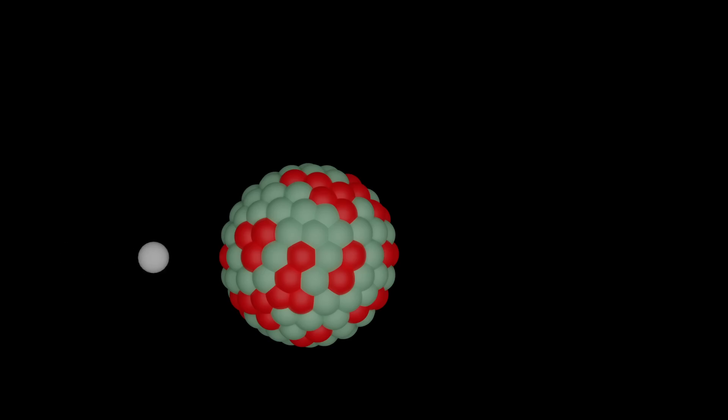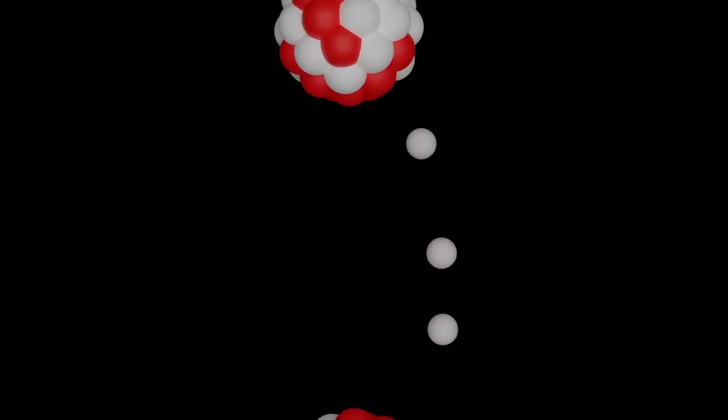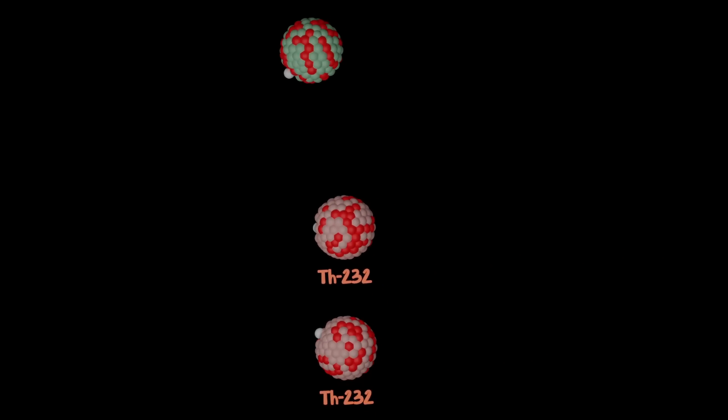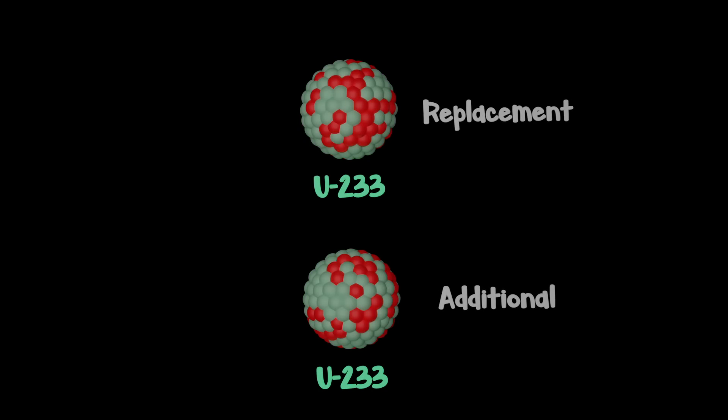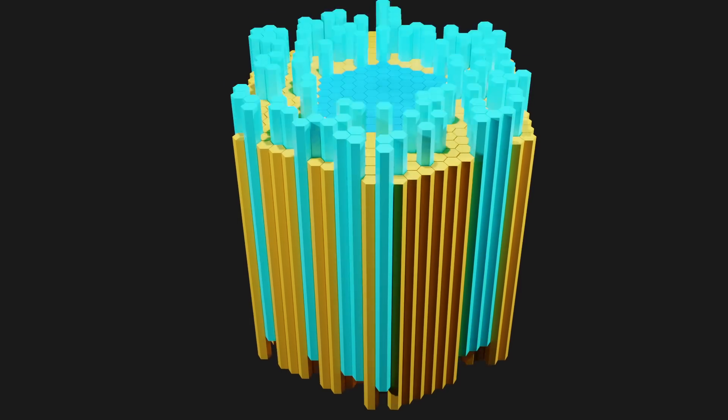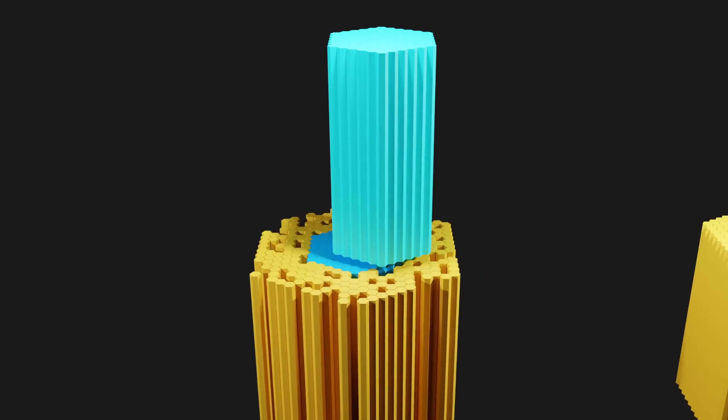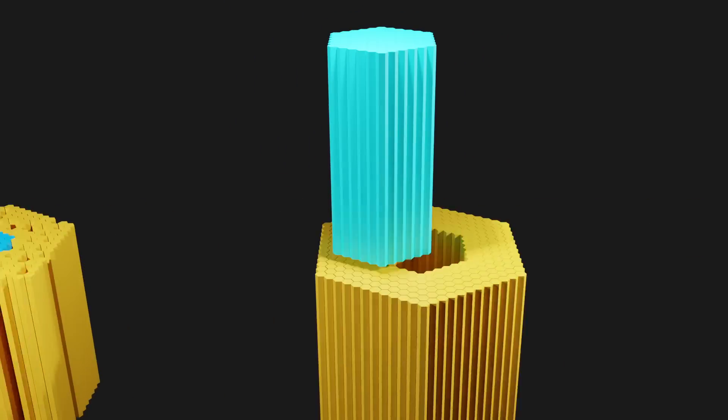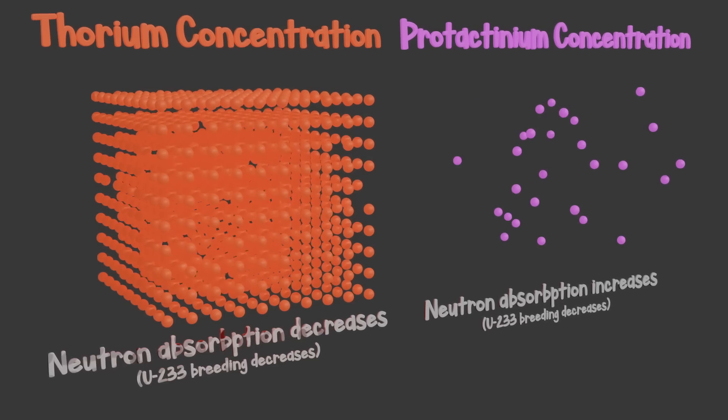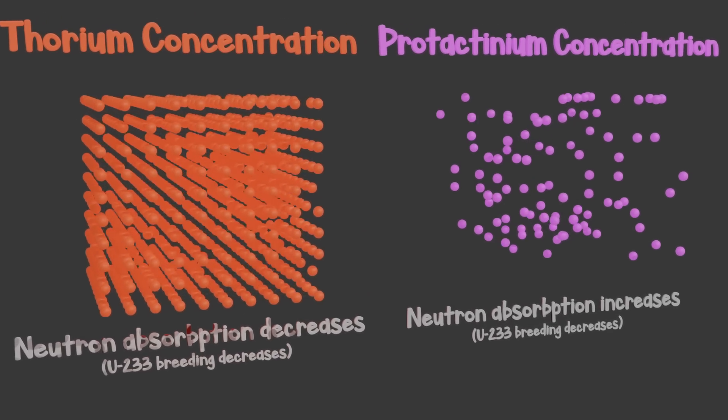One of the selling points of thorium reactors is their breeding ratio, or the idea that for every atom that fissions, more than one atom of thorium will absorb a neutron and become uranium-233. This means more fuel is created than is consumed. One could then use that excess fuel to start another thorium reactor, eliminating the need for the outside fissile material. But as the concentrations of protactinium and thorium change, the breeding ratio decreases.